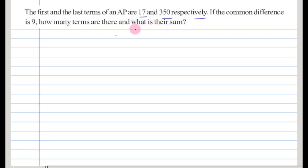Here they mention that first term of an AP, a, as 17 and last term as 350, and the common difference they mention as 9. Then we need to find out how many terms are there, then what is their sum?